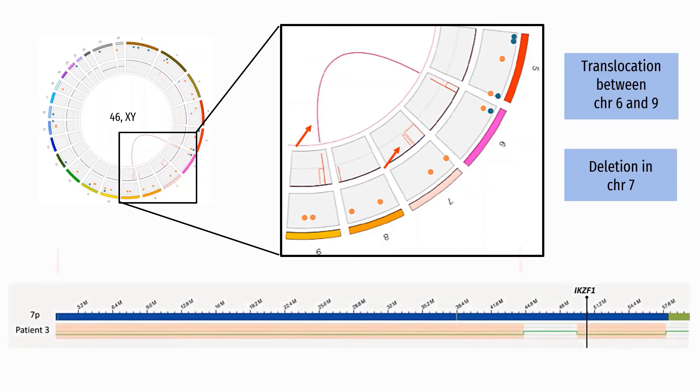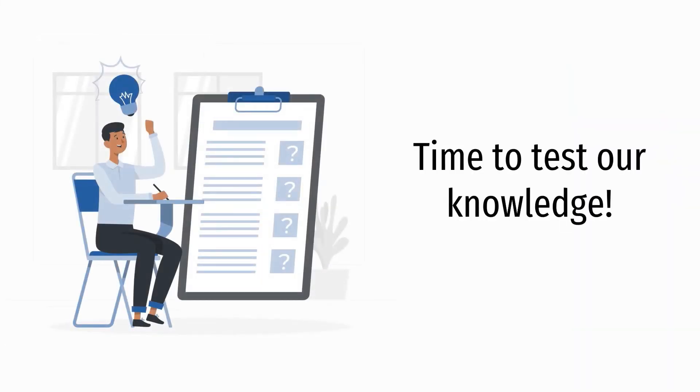We can further examine these structural variations in the genome browser. The deletions in the p-arm of chromosome 7 are represented as the red boxes, and using the blue reference bar, we can determine the location of the deletion. Now it's time to take a quick knowledge test.